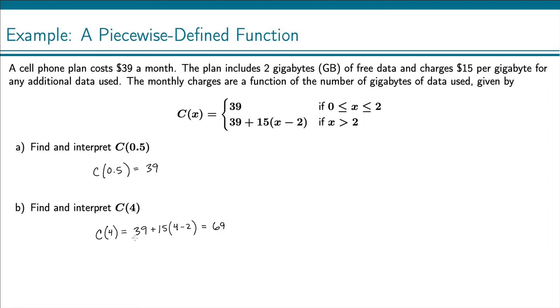That's the initial $39, plus, and then this number here, the 4 - 2, that means I used 2 gigabytes beyond the free 2 gigabytes.